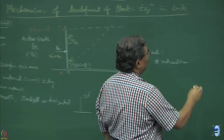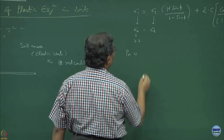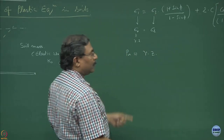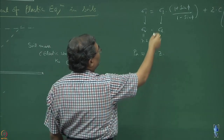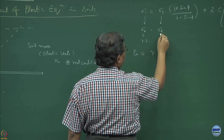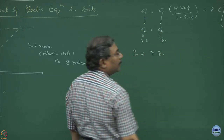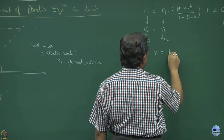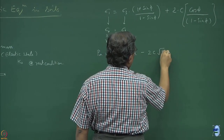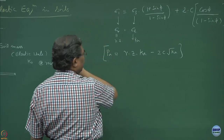The equation I am going to use for active earth pressure will be equal to gamma times z — you have to do a bit of manipulation. Sigma 3 goes on this side, which is equal to Pa. This becomes Ka times gamma z minus 2c root of Ka. You can derive this very easily.